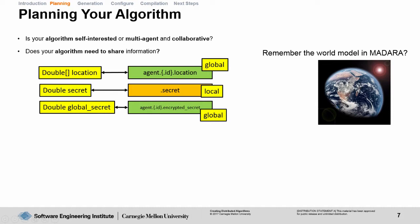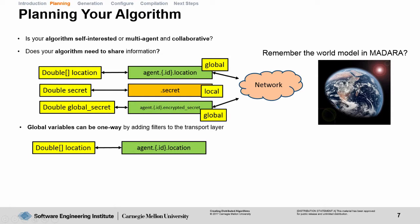The dot secret variable will never be attempted to broadcast across the network. Global variables can be one way by adding filters to the transport layer. MADARA's transport system allows you to add on-receive, on-send, and on-rebroadcast filters that can shape knowledge into the knowledge base or from the knowledge base to the network.